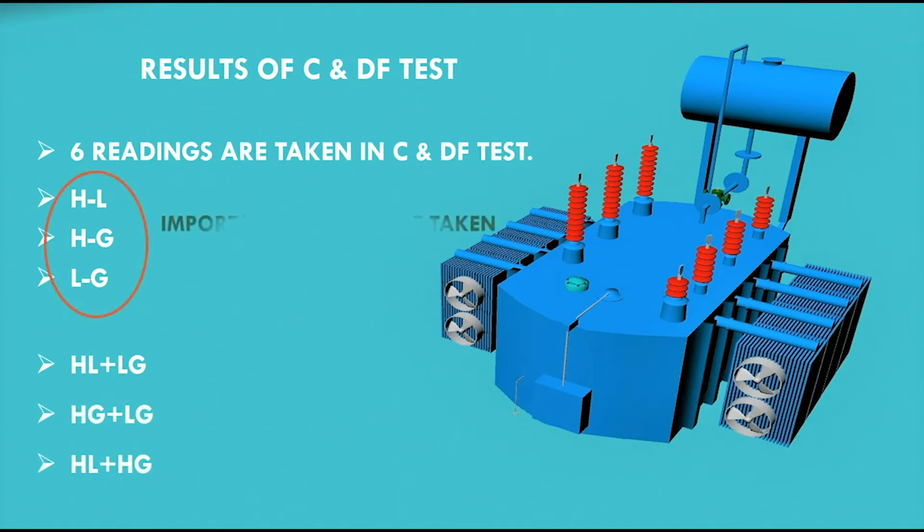The first three readings are important and must be taken. The last three readings are only taken to verify the first three readings. These show the combined values of C and DF for HV, LV and ground.